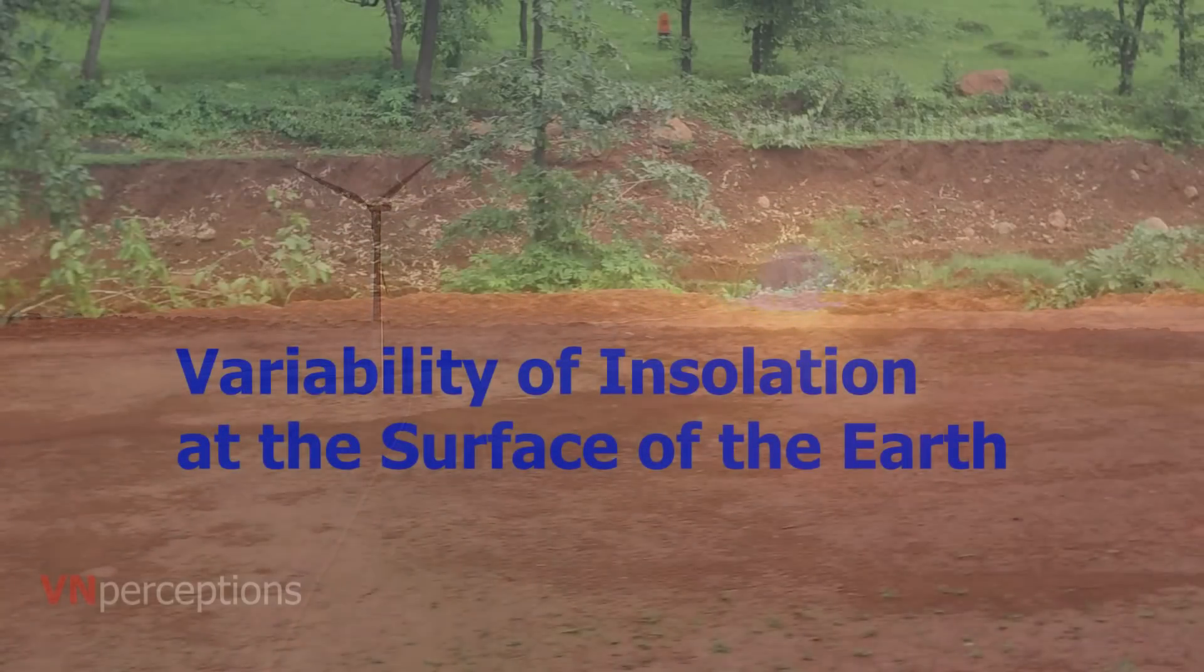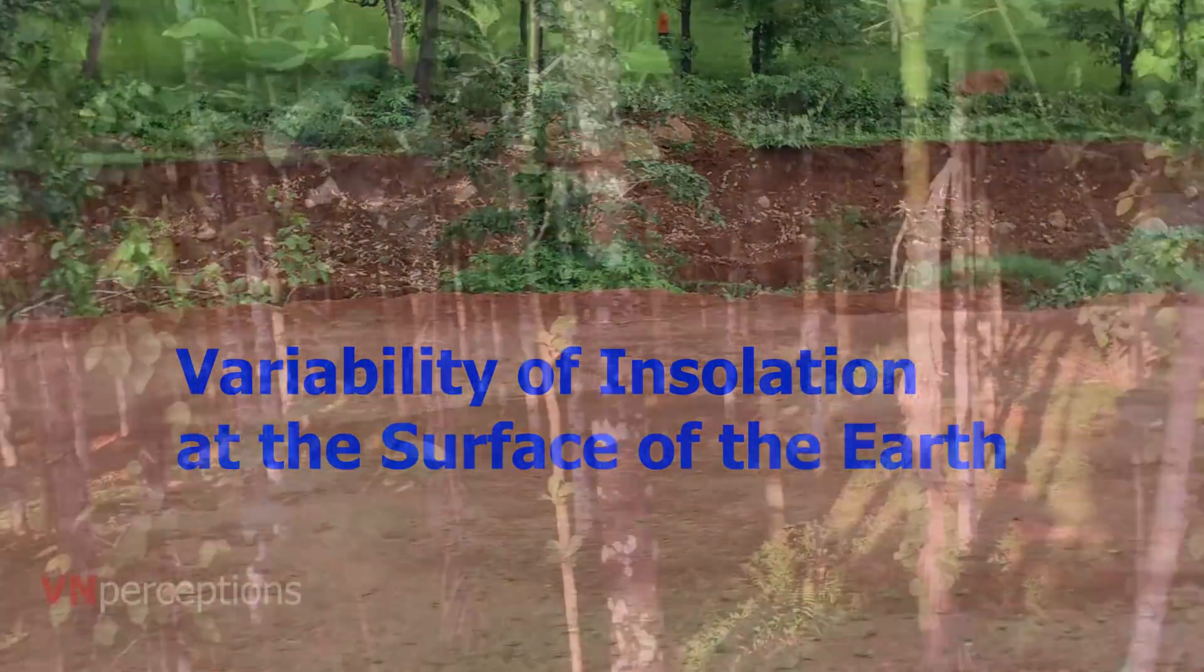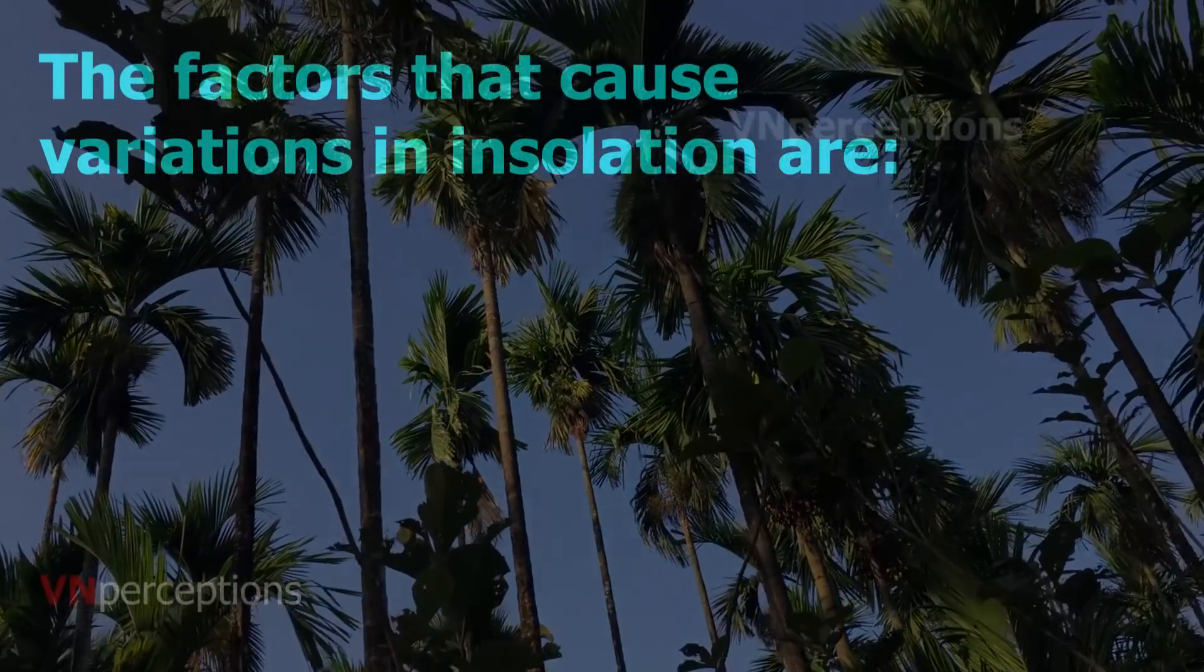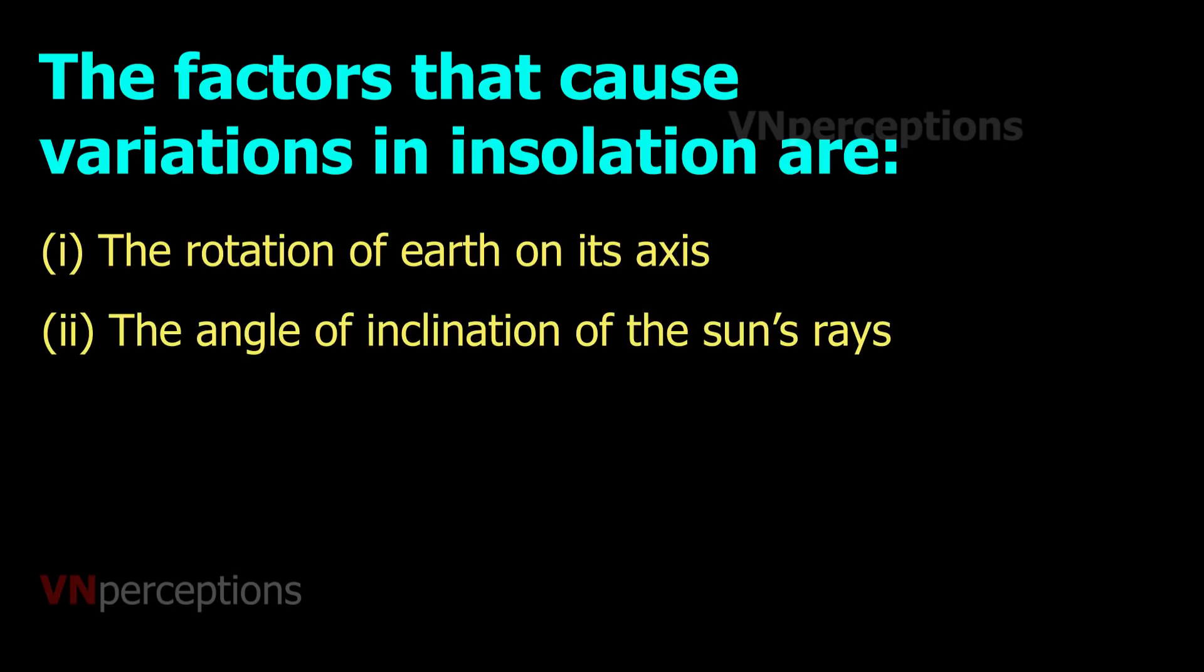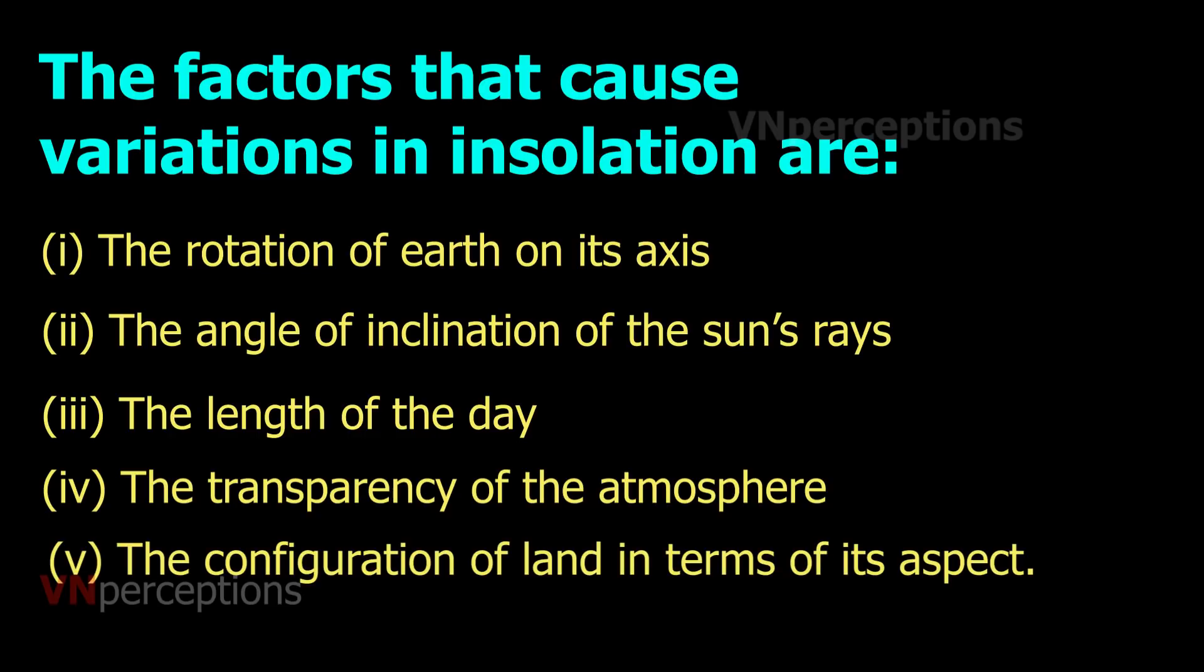The amount and intensity of insolation vary during a day, in a season, and in a year. The factors that cause these variations in insolation are: first, the rotation of the earth on its axis; second, the angle of inclination of the sun's rays; third, the length of the day; fourth, the transparency of the atmosphere; and fifth, the configuration of land in terms of its aspect.